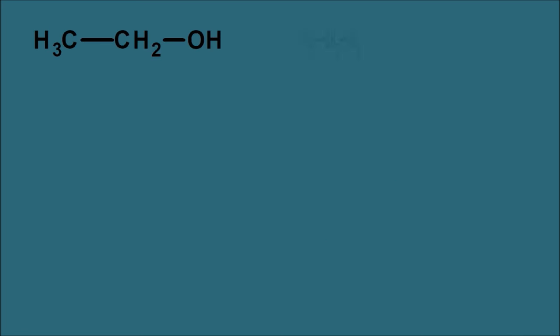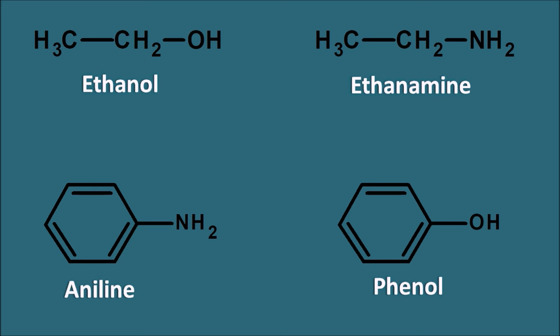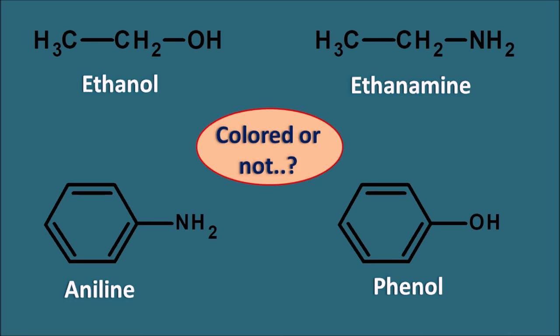So what is chromophore? In order to understand this, let us consider four structures here. The first one is ethanol, the second one is ethanamine, the third one is aniline, and the fourth one is phenol. Now whether these structures are colored or not — ethanol with the OH group is colorless, ethanamine is again colorless, aniline is colorless, and phenol is again colorless. Any color imparted to aniline or phenol is because of impurities, so pure aniline and pure phenol are colorless compounds.